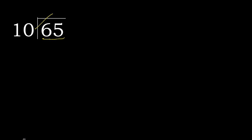10 multiplied by which number is nearest to 65 but not greater? 10 multiplied by 7 is greater. Multiplied by 6 is 60. 60 is not greater than 65. 65 minus 60 is 5.